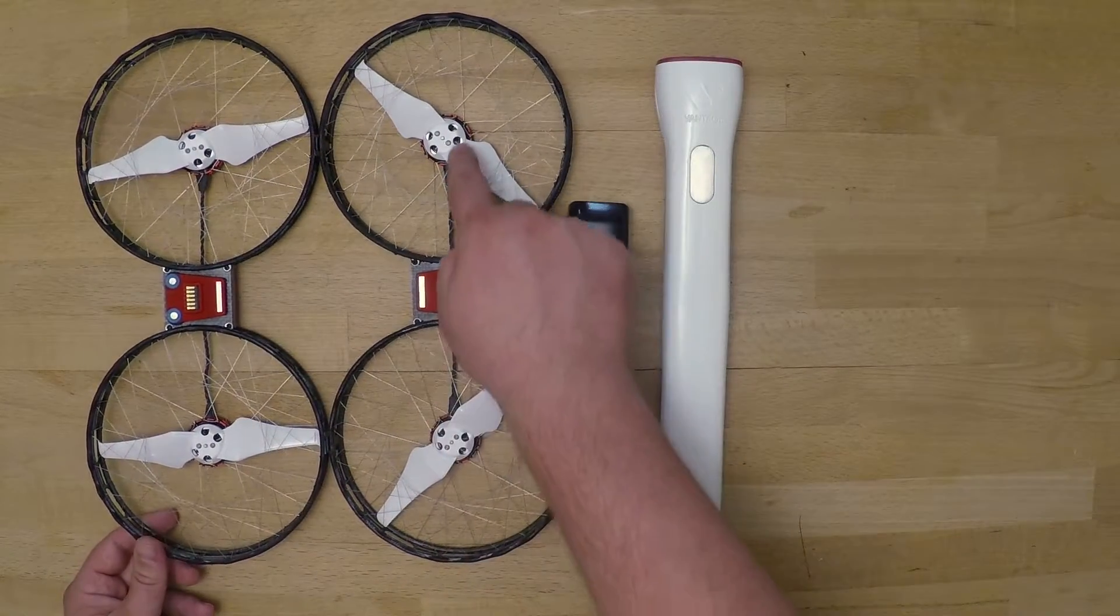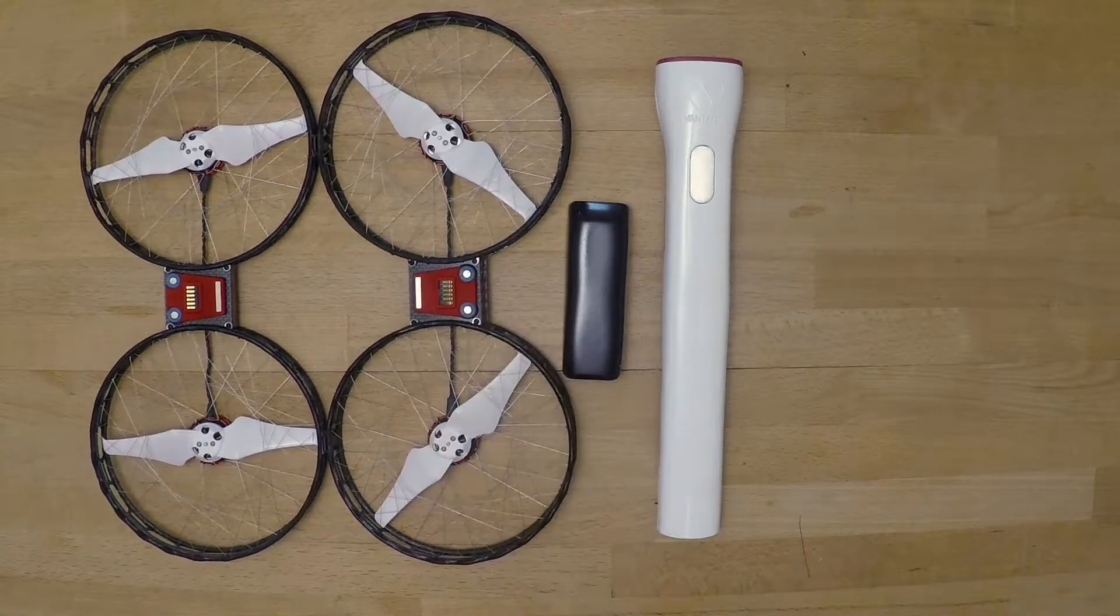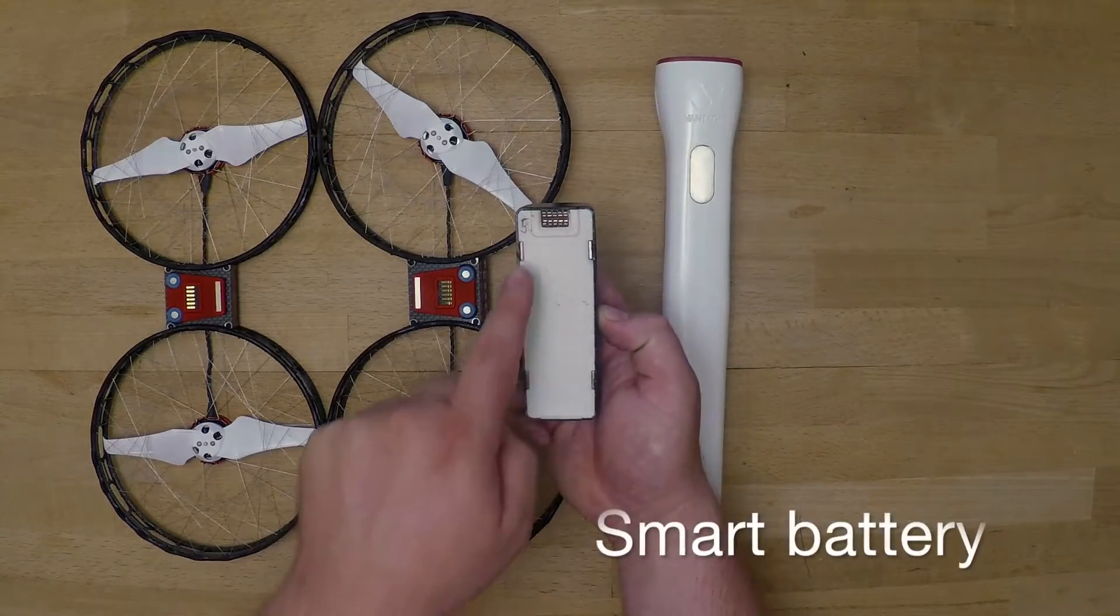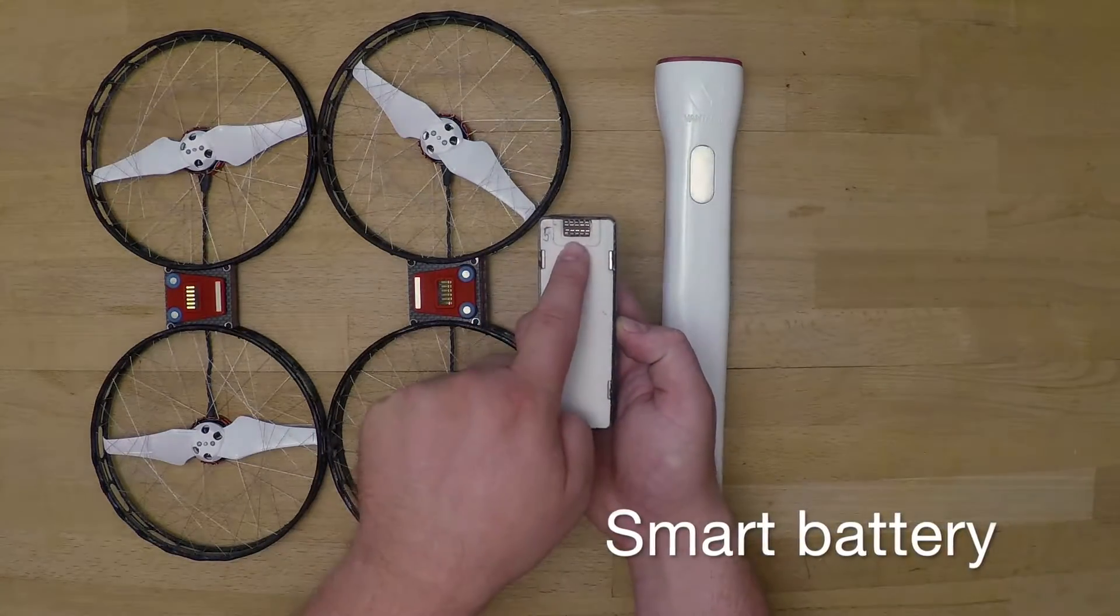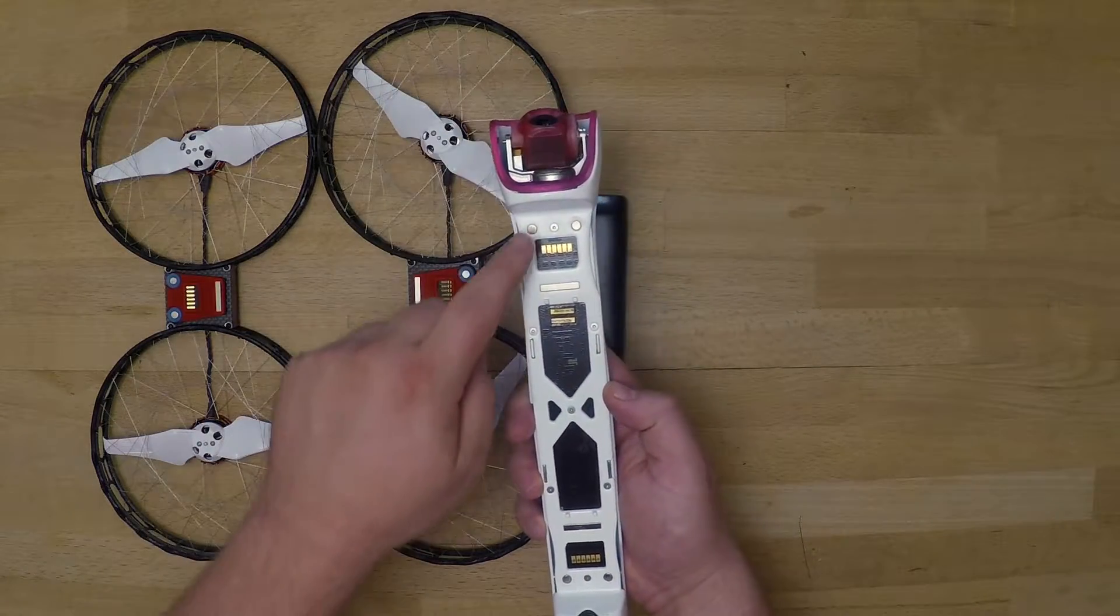Here is the contact that will connect the motors to the body, and then around that there are three little magnets. On the smart battery we have four magnets and a similar contact. This is the body—here's the camera.